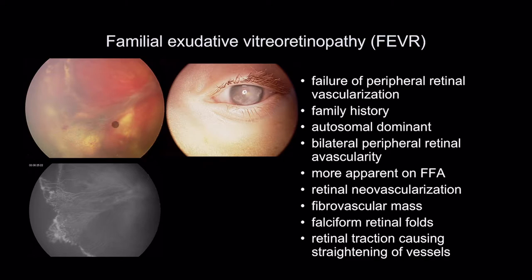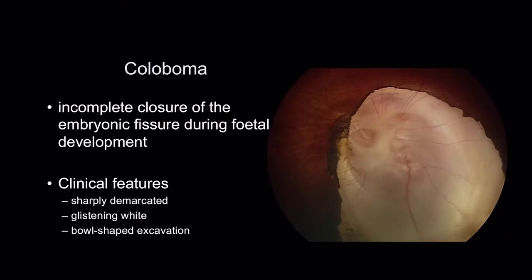Here is a case: you can see fibrovascular changes with a stalk, and on fluorescein angiography, areas of avascularity with abnormal vasculature. In this kind of case, dilate the parents and examine them. If you can't see anything clinically, you might need to do a fluorescein angiogram in the parents.